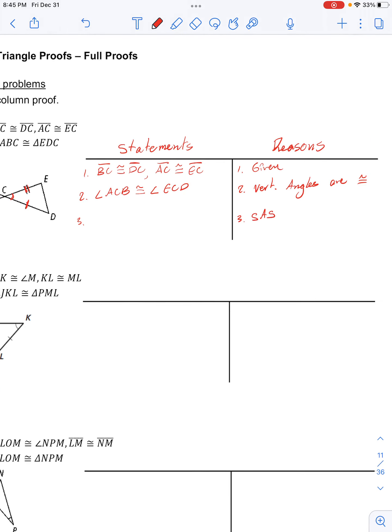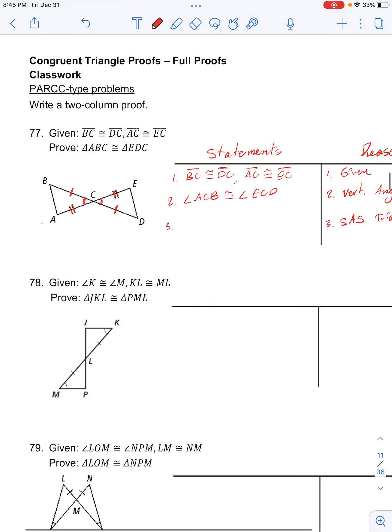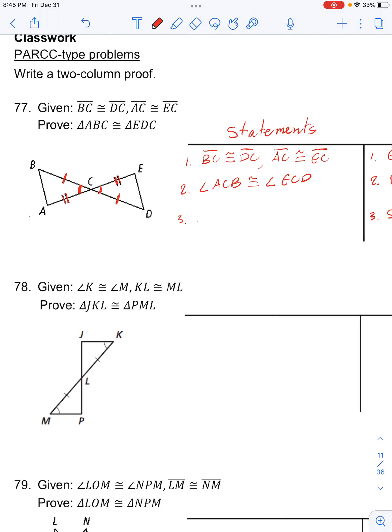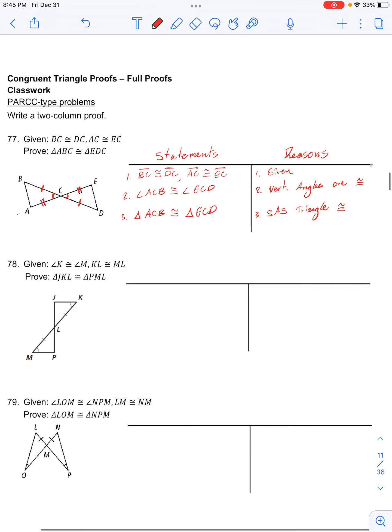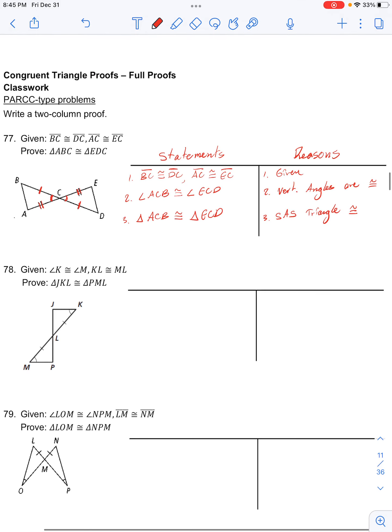So if we have SAS triangle congruence, then it follows that our triangles ACB and triangle ECD are congruent. Our proof is complete.